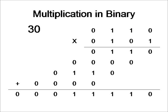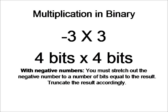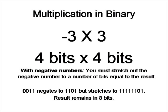All right, so now you know how to multiply in binary, so let's see how we multiply in binary using negative numbers. Now we just have to follow the two's complement for this one, so let's multiply negative 3 times 3. With negative numbers, you must stretch out the negative number to a number of bits equal to the result. And then we have to truncate the result accordingly. So basically in this case, the negative 3 has to be stretched out to 8 bits in order to work on the problem.